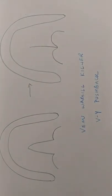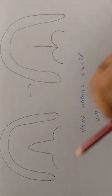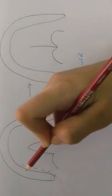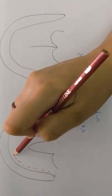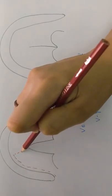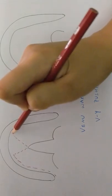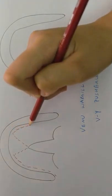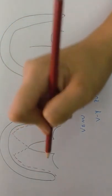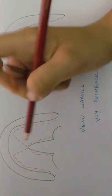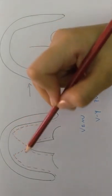Another technique is the VY pushback or the Veau-Wardill-Kilner (VWK) technique. In this technique, similarly up to the maxillary tuberosity until the greater palatine foramen you make your lateral incisions, but this incision comes and meets here in the midline where the cleft lies, forming the V shape. These pairing incisions will come and meet at the level of the cleft.